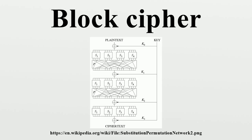Substitution-Permutation Networks. One important type of iterated block cipher known as a substitution permutation network takes a block of the plaintext and the key as inputs. The non-linear substitution stage mixes the key bits with those of the plaintext, creating Shannon's confusion. The linear permutation stage then dissipates redundancies, creating diffusion. A substitution box substitutes a small block of input bits with another block of output bits. This substitution must be one-to-one to ensure invertibility. A secure S-box will have the property that changing one input bit will change about half of the output bits on average, exhibiting the avalanche effect.